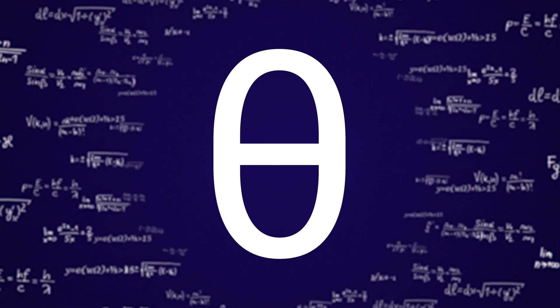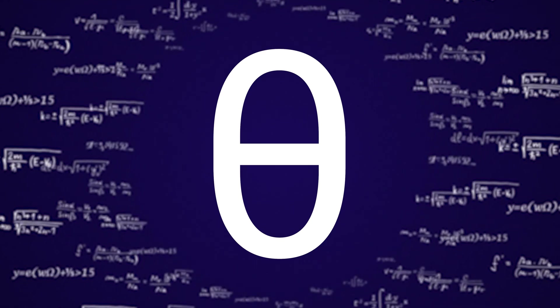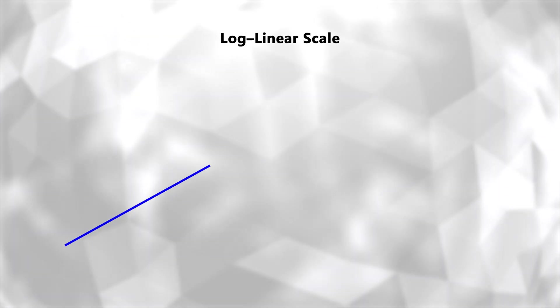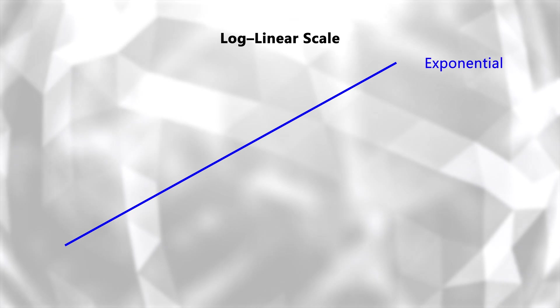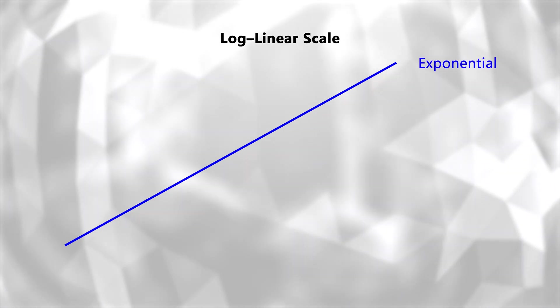The way different growth patterns show up all comes down to one key parameter, theta. If theta is 0, that means growth is constant. Theta to the power of 0 is just 1, which keeps the growth steady over time. This gives us what's called exponential growth. The network keeps expanding at the same steady rate without slowing down.